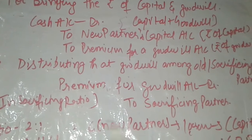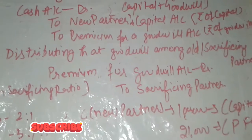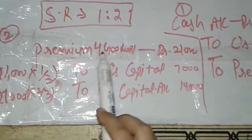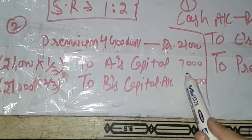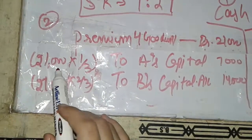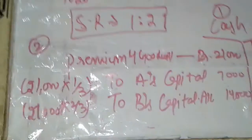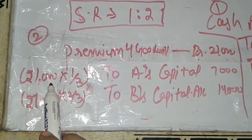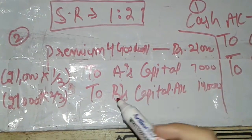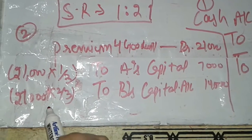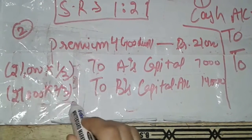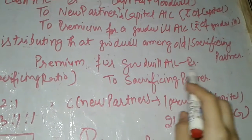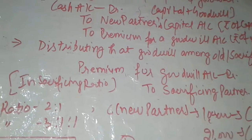After passing the first entry, the second entry is to distribute the goodwill among the old partners in the sacrificing ratio. Premium for Goodwill Account debit 25,000; to A's Capital Account; to B's Capital Account — in the sacrificing ratio of 1:2. So A receives one-third of 25,000, which is approximately 7,000 (here stated as 21,000 × 1/3 = 7,000), and B receives two-thirds, which is 14,000.